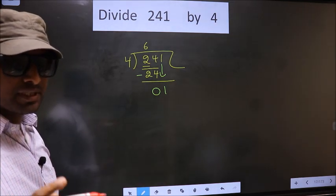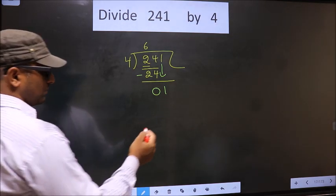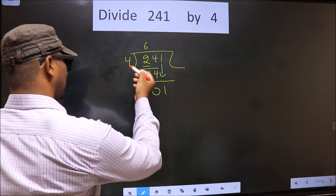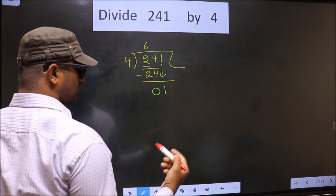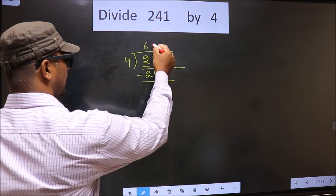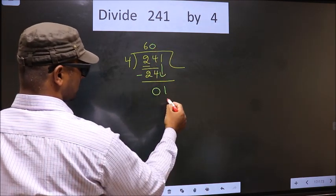Instead, what you should think of. Instead, what number should we write here. If we write 4, that will be larger than 1. So, what we do is, we take 0 here. So, 4 into 0, 0.